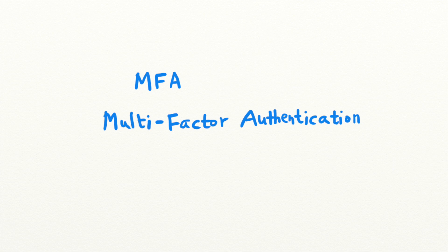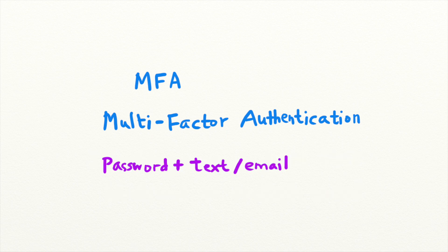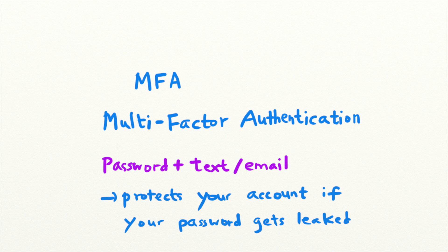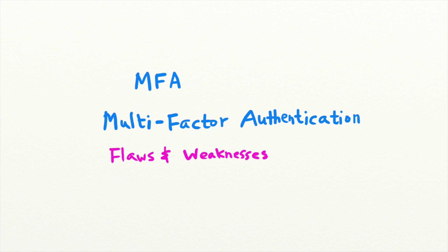Multi-factor authentication refers to the practice of requiring users to prove their identity in more than one way. For example, when you try to log into a site, you might have to enter your password and also receive a code on your phone or your email. This protects users when their passwords are stolen. However, if an application implements MFA incorrectly, attackers can exploit weaknesses in the authentication to bypass MFA. Let's take a look at the different ways that this can happen.